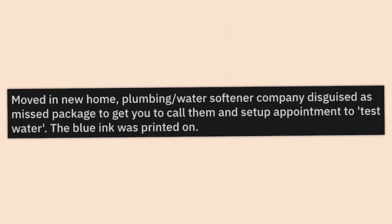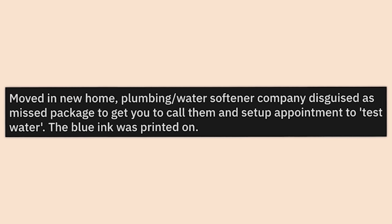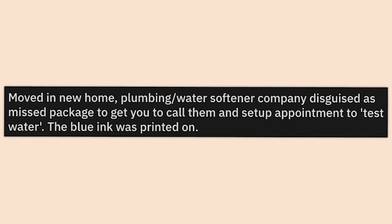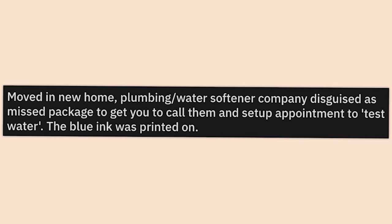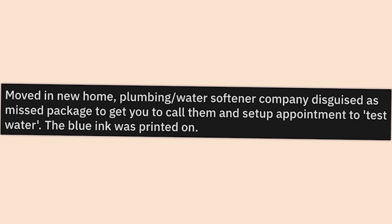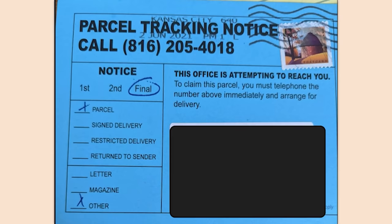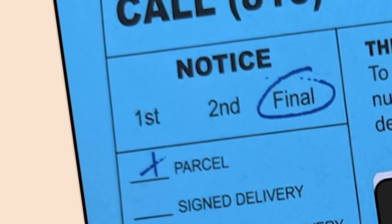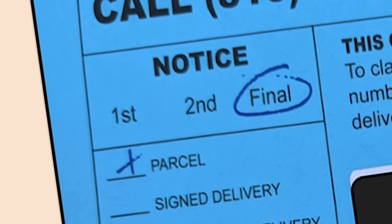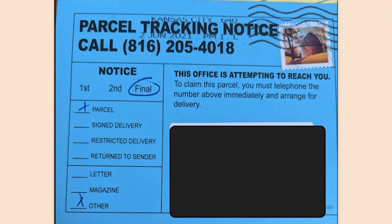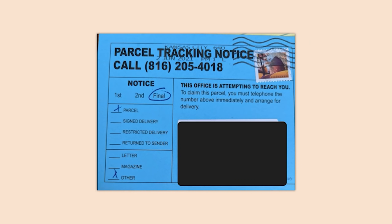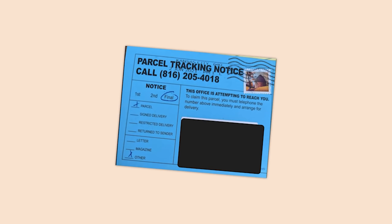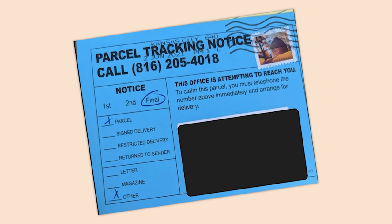Moved into a new home — plumbing and water softener company disguised their junk mail as a mispackage to get you to call them and set up an appointment to test the water. The blue ink was printed on — yeah, they do this all the time with the fake handwriting. They're getting smarter. Automatic one star on Google though — that's right, I'll be a Karen.